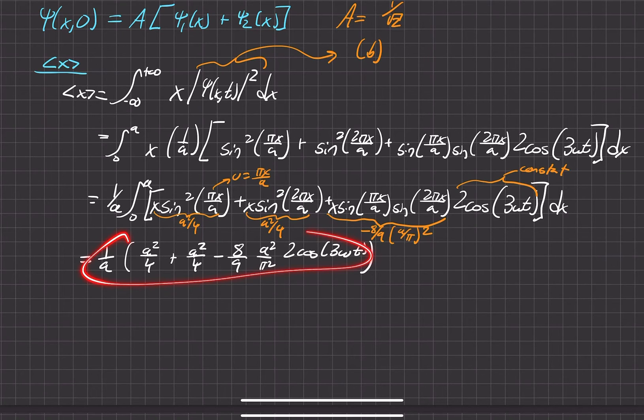So more algebra happens here. That 1 over a gets distributed, and then that 1 over a over 4, those combined to be a over 2. And same thing happens with this area over here. And then we'll finally get a over 2 minus, we'll just go a over 2.